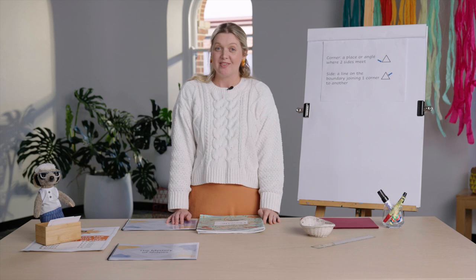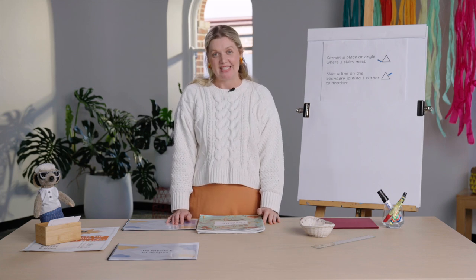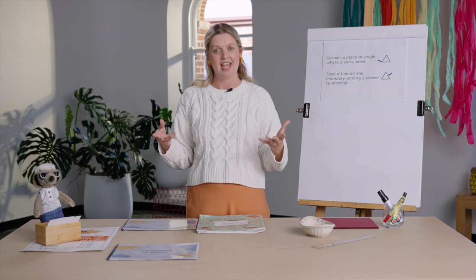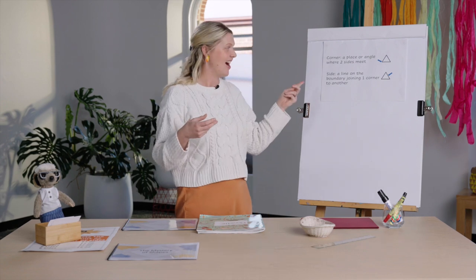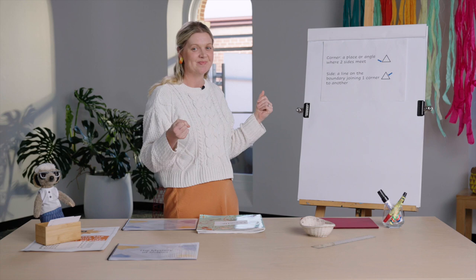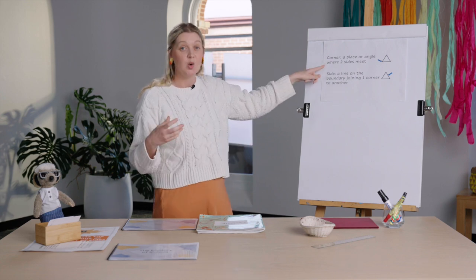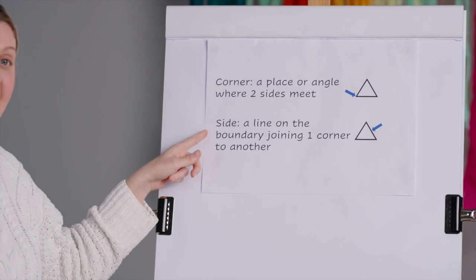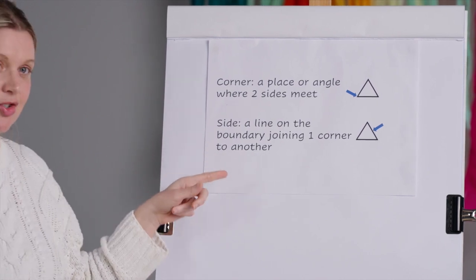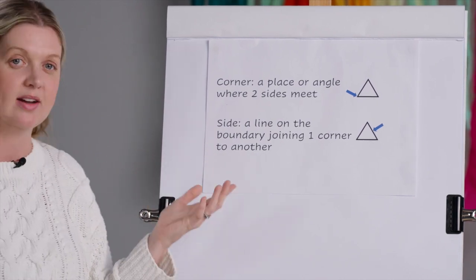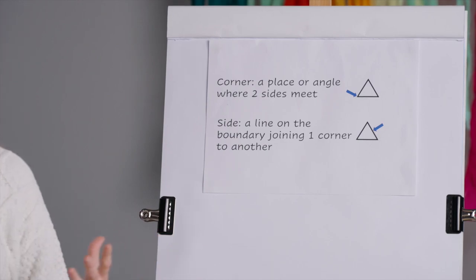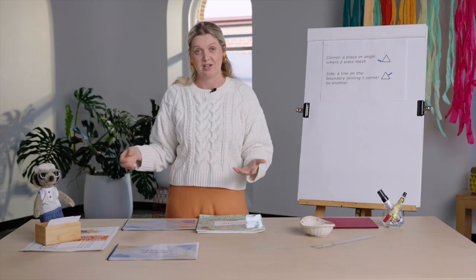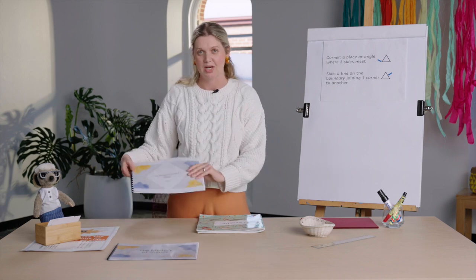You may have joined in on Lesson 57 where we learnt that two-dimensional shapes have sides and corners. Remember, a corner is a place or angle where two sides meet, and a side is a line on the boundary joining one corner to another. We had to help Mike Meerkat learn a little bit about two-dimensional shapes, and I read him a story to help.